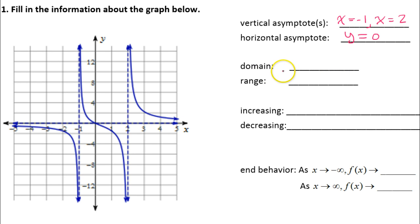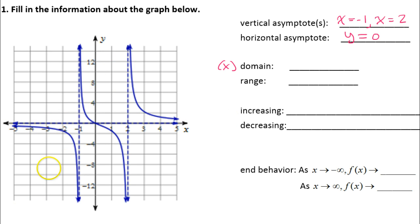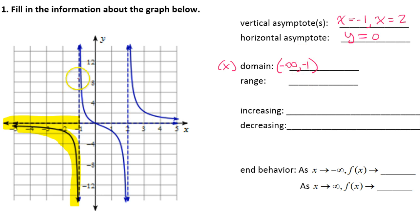Now let's talk about the domain. The domain is the x values of a graph — how far the graph goes from left to right. This portion of the graph on the x-axis goes from negative infinity to negative one. The first part of the domain goes from negative infinity to negative one, left round because you can't touch the asymptote — negative one is not included. Union.